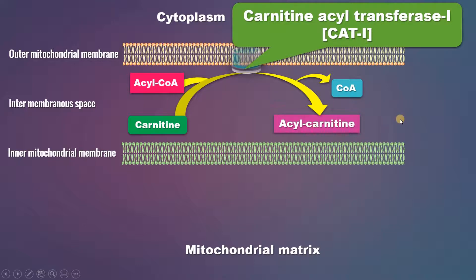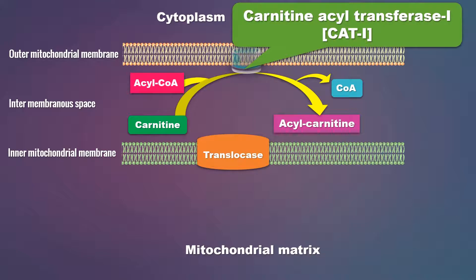This acyl-carnitine can easily be transported across the inner mitochondrial membrane with the help of a transporter protein called carnitine acyl-carnitine translocase — also referred to as the carnitine acyl-carnitine transport protein. This translocase is located in the inner mitochondrial membrane and is a transmembrane protein, allowing acyl-carnitine to cross into the mitochondrial matrix.